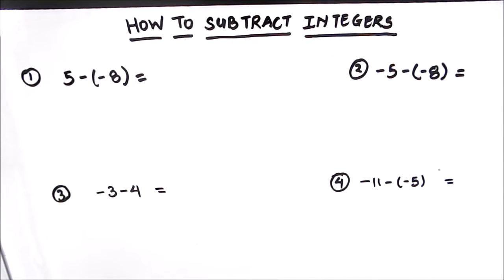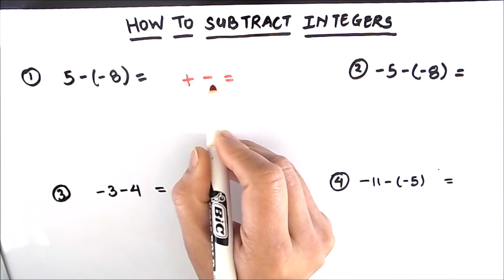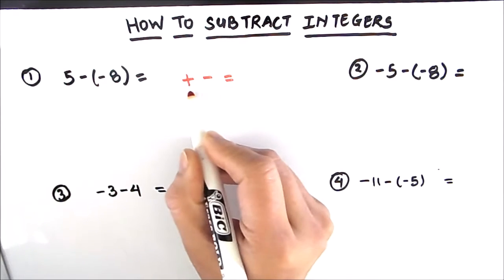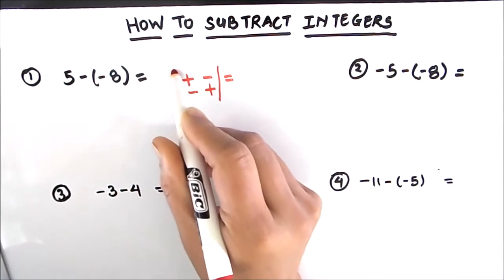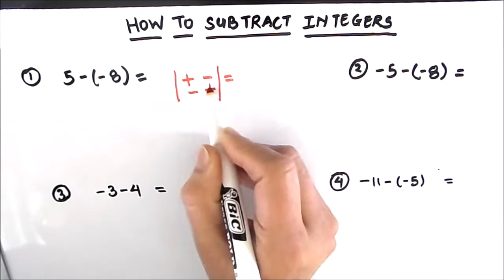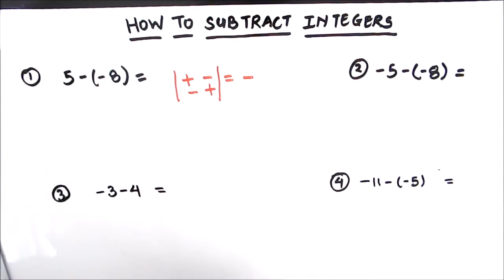Hello students. In this video we are going to learn how to subtract integers. Before starting, let us revise the rules for subtracting integers. Whenever there is a positive sign and a negative sign, or a negative sign and a positive sign — that means the signs are opposite — we are going to subtract the two numbers.